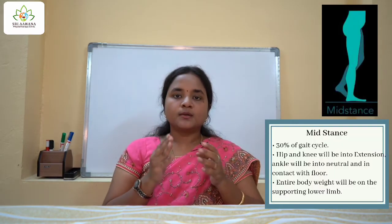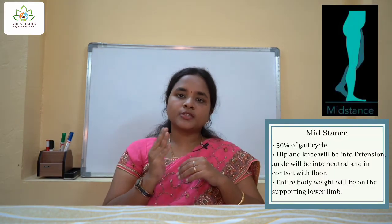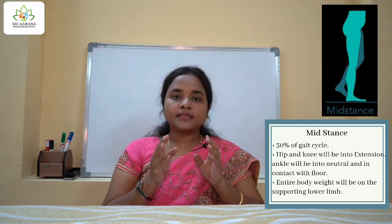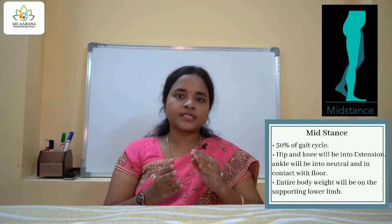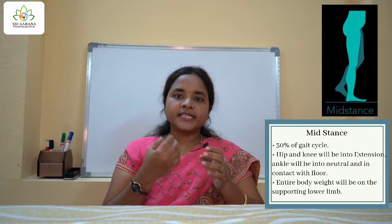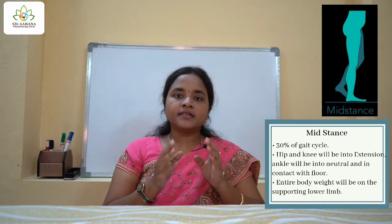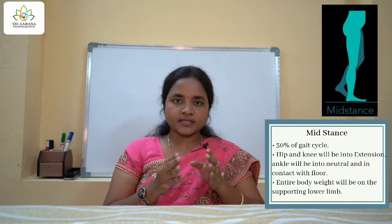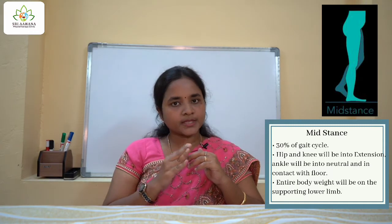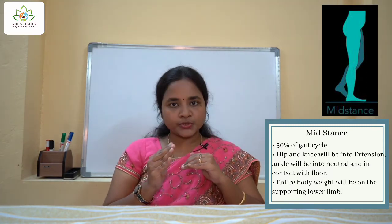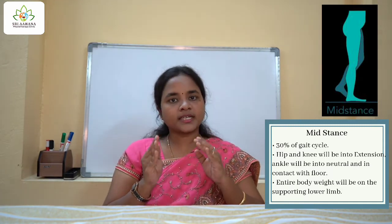The next event is mid stance, which contributes to around 30 percent of the gait cycle. This is the phase where the supporting limb takes up the entire body weight. During mid stance, the hip and knee will remain in extension and the ankle will be neutral and in contact with the floor.